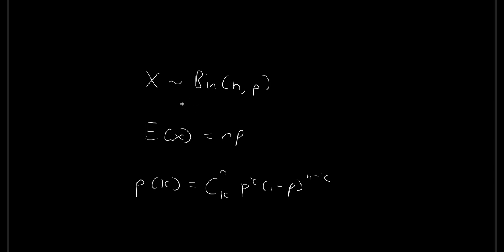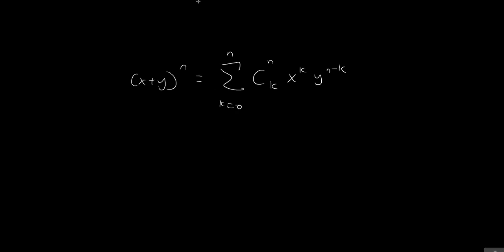In this video, I'm going to prove that the expected value for the binomial distribution is equal to np for parameters n and p, where n is the number of trials and p is the probability of success. I've written down the formula for the binomial theorem here just for reference.